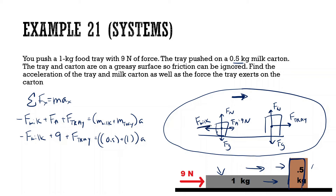While the tray pushes the milk carton to the right, the milk carton pushes back on the tray to the left. These two forces are equal but in opposite directions, meaning they cancel out with one another.